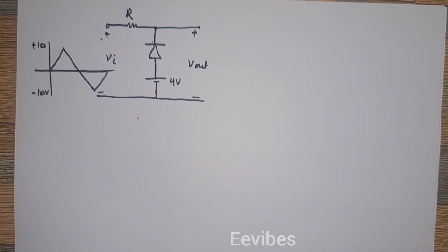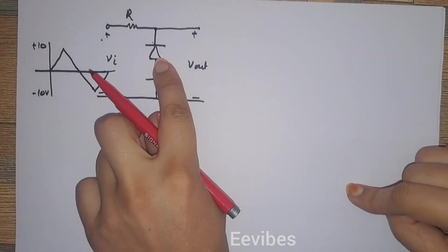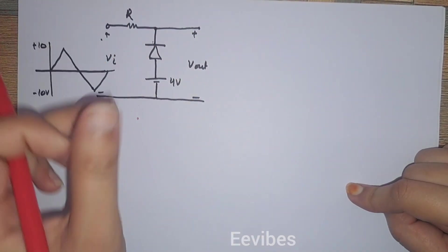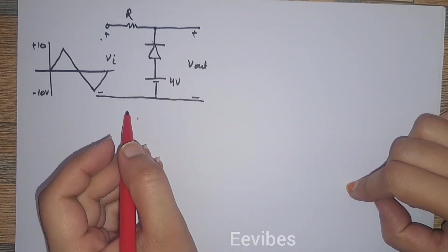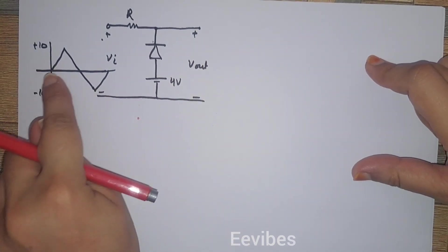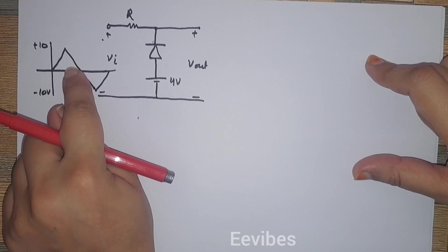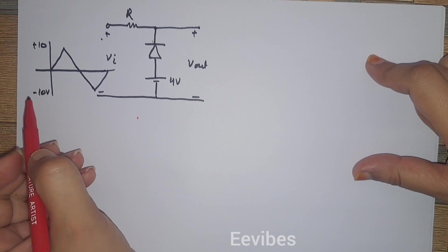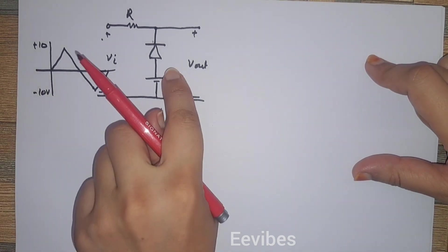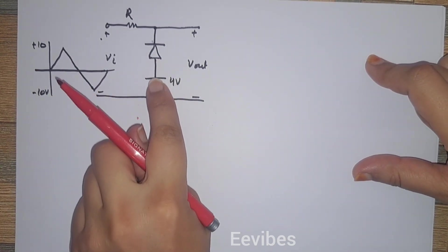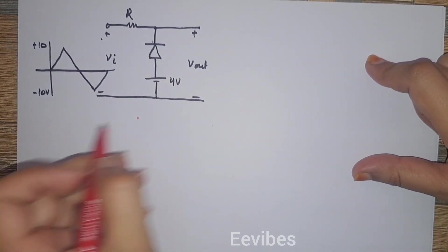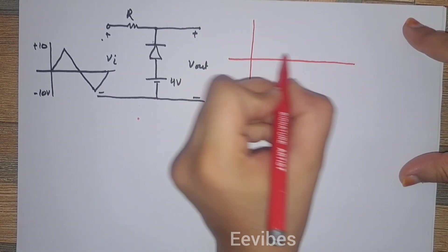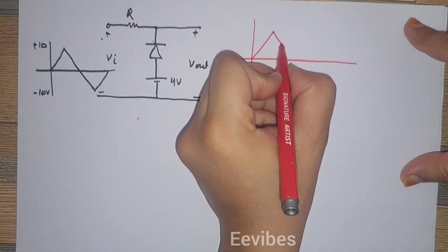Now let's consider another circuit — an example of a parallel biased clipper. Again, you can see a battery is connected in series with the diode, and we are taking the output terminal across that point. Here I have chosen a triangular waveform as the input voltage, with a magnitude ranging from minus 10 volts to plus 10 volts. The anode terminal is held at a fixed positive 4 volt potential. Let's see how the output will be affected.